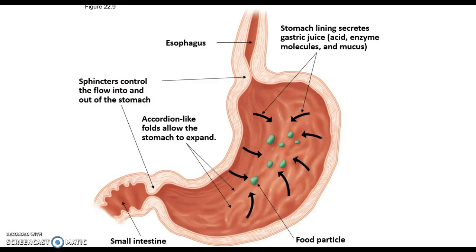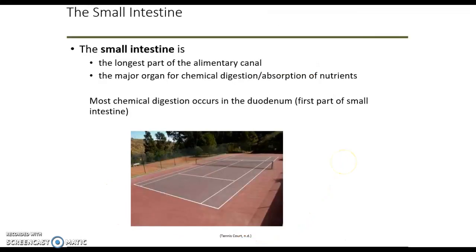After peristalsis moves food down into our stomach, we have more mechanical digestion — food is churned up, creating chyme. Chyme is that mixture of food and the digestive acids and enzymes, so we have both mechanical and chemical digestion happening in the stomach. The small intestine is the largest part of the alimentary canal, where most nutrient absorption happens, and a lot of chemical digestion still occurs in the first part of the small intestine, called the duodenum.